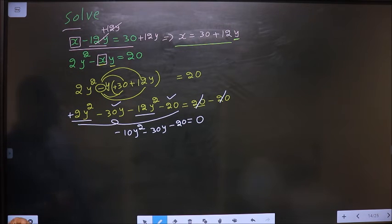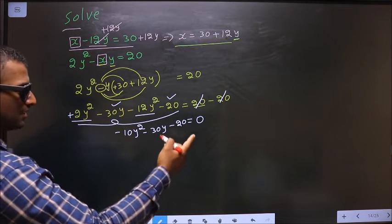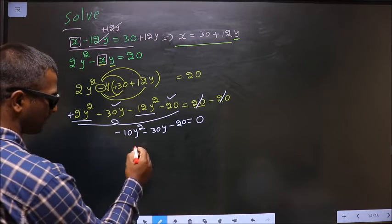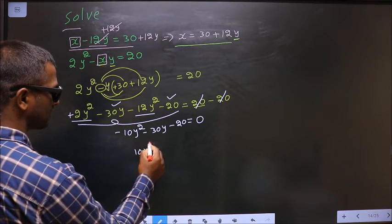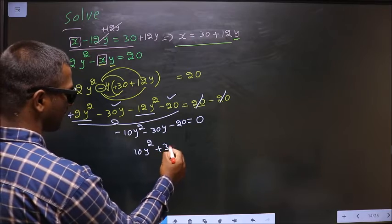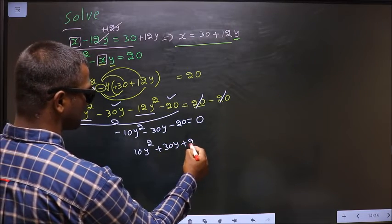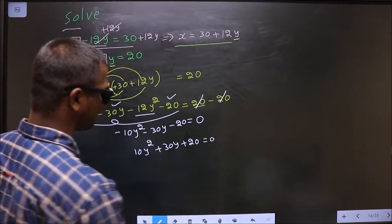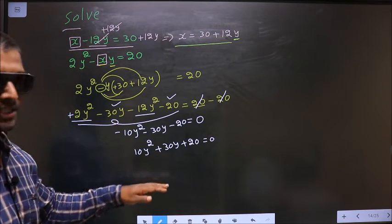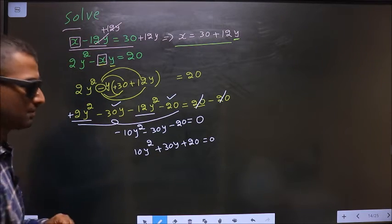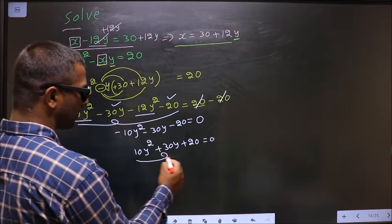Now, if I multiply each term with minus 1, I get 10y square plus 30y plus 20 equal to 0. I am not simplifying this equation further because I got quadratic.